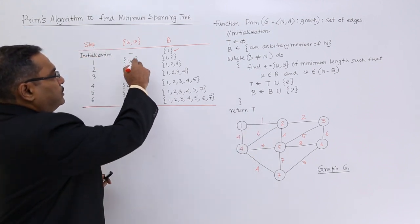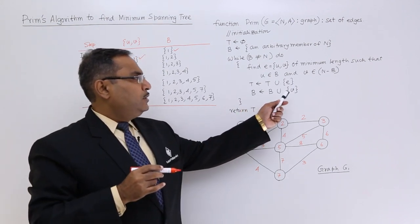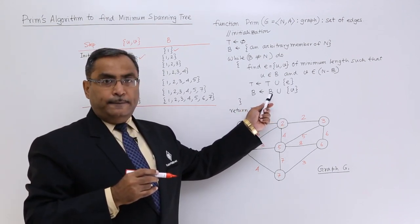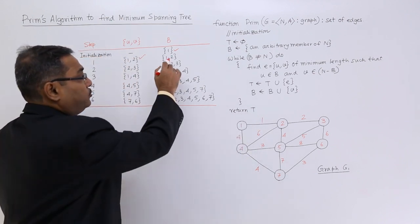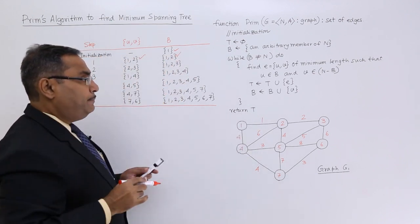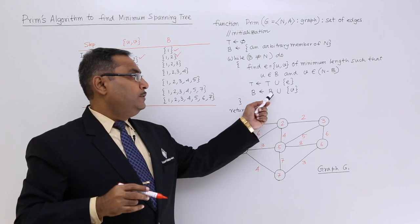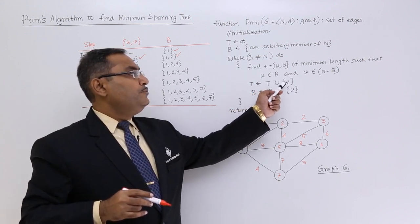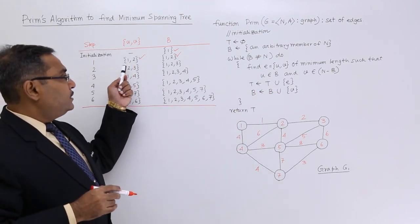I should consider this particular edge, and this particular new node will be included in b. 2 has got included, union with b, and now t is equal to t union e. This is the edge we have considered.